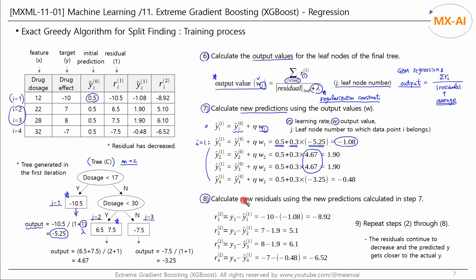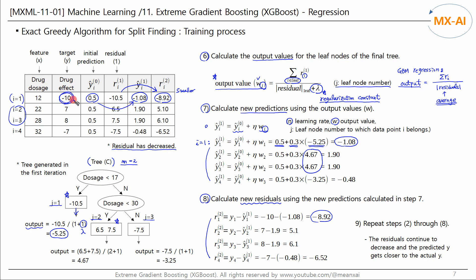Step 8 computes new residuals using the new predictions. For the first data point, the actual Y value was negative 10 but the new prediction is negative 9.8, so the new residual is negative 8.92. We calculate new residuals for all data points and see that they are smaller than the residuals from the previous iteration. As the iteration progresses, the residuals become smaller and smaller, and the new predictions become more and more accurate. Step 9 creates a new tree using the new residuals, and we repeat this process until residuals are sufficiently reduced.